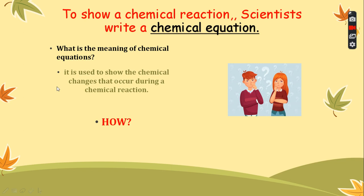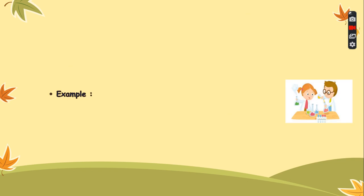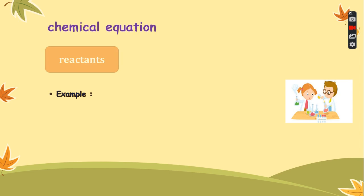We have chemical reactions, we have chemical changes. We have substances that we start the chemical reaction with, and these substances react with each other to have a new product. Let's see — what is the meaning of a chemical equation? Let's have an example to have more understanding. In any chemical reaction we have reactants.